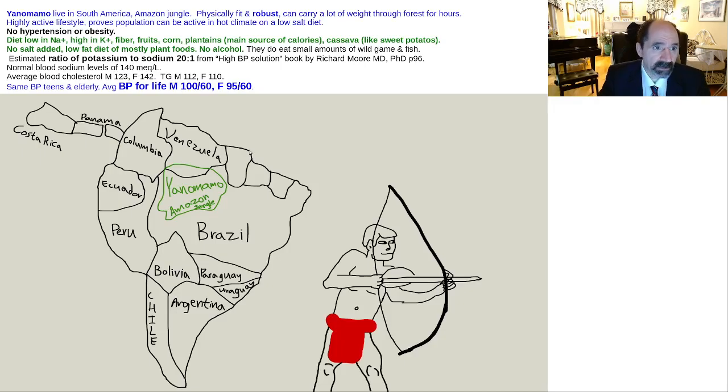Their diet is primarily plant-based: a lot of plantains like bananas, a lot of fruits, corn, some cassava, which is sort of like a sweet potato as far as I can tell. They do eat some wild game and fish.